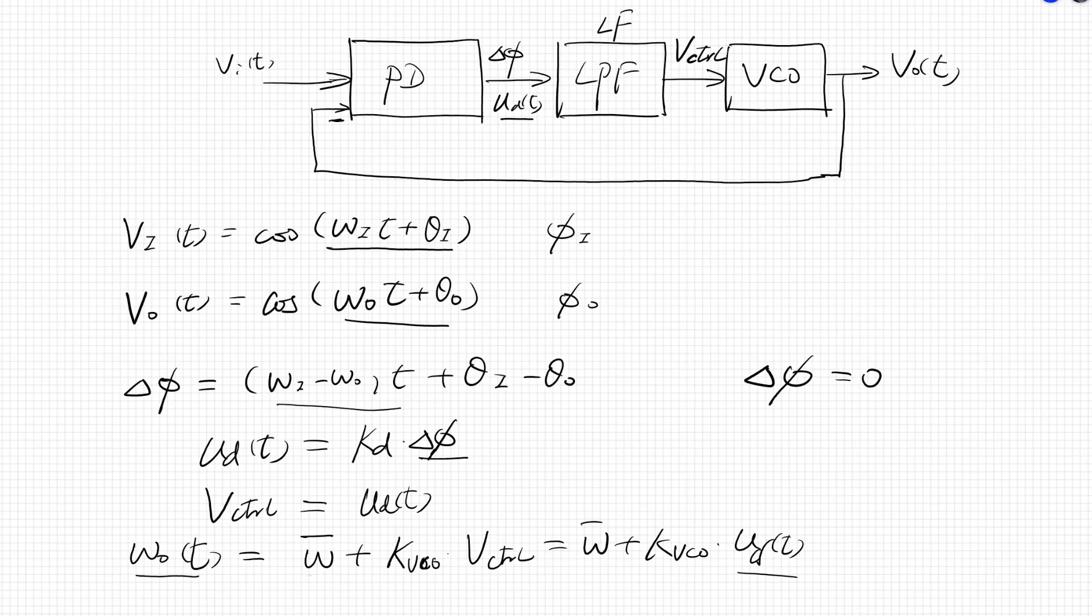After a while, eventually, the VCO will oscillate at a frequency that is exactly the frequency of the input signal VI. Therefore, finally, not only the instantaneous phase difference is zero, but also the output signal VCO tracks to the frequency of my input signal, VO equal to VI. Now at this time, we call that the phase locked loop is locked.